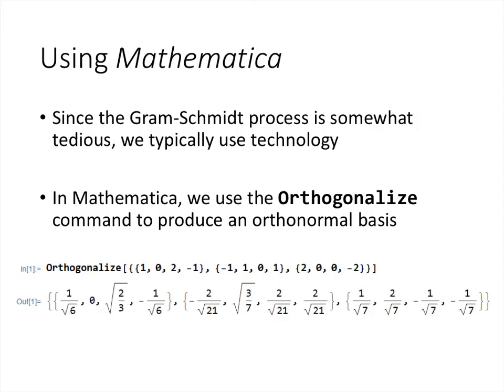So in Mathematica, if we want to use this, we can use the orthogonalize command. So all orthogonalize is going to do is exactly the Gram-Schmidt process that we've done, plus it's also going to normalize the vectors for us. So we input a list of vectors, in this case I've got the first vector x1, the second vector x2, and the third vector x3, and we put those in a list. So then when we execute this command, we get the orthonormal basis that we were looking for.